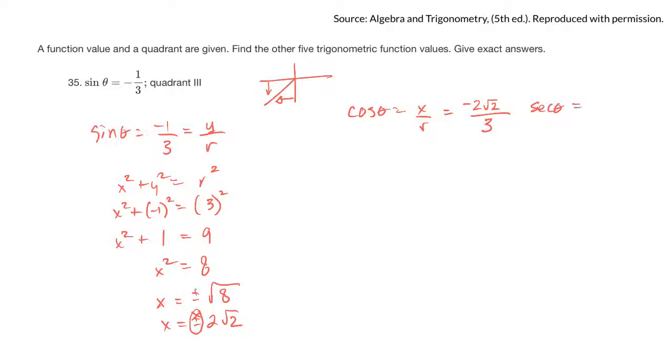And of course, secant would be the reciprocal of that, or 3 over negative 2 root 2, which you should rationalize by multiplying top and bottom by root 2. So you'd get 3 root 2 over negative 2 times 2 would be negative 4. Usually I write it with a negative up top, so negative 3 root 2 over 4. That's what secant would be.